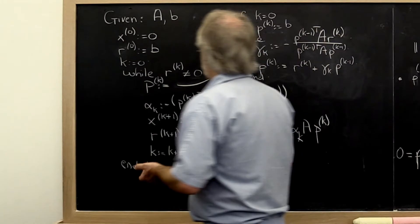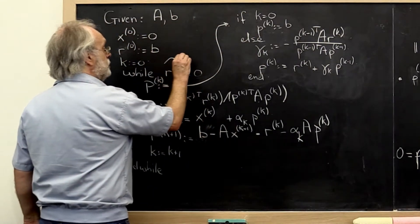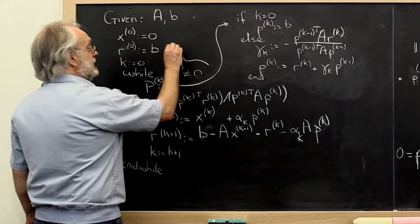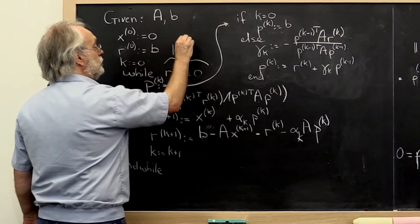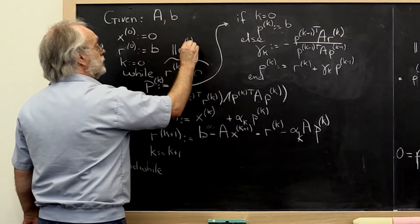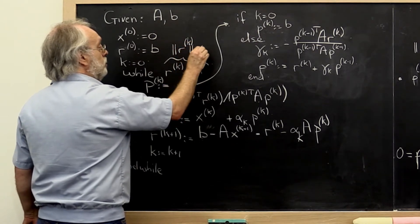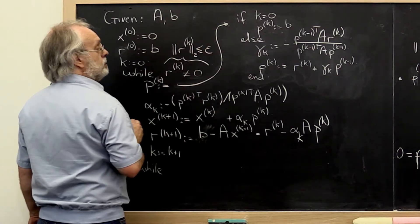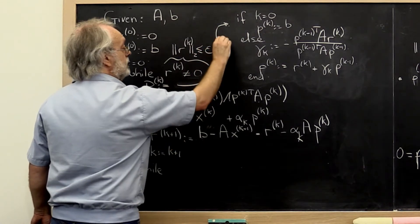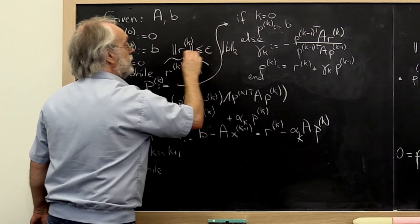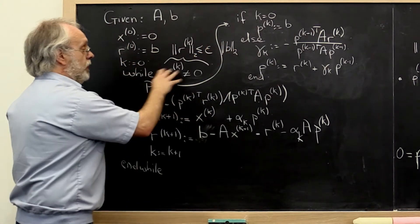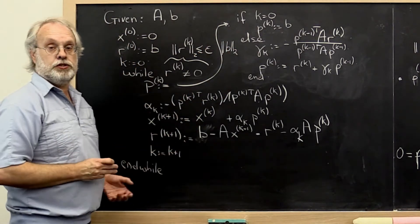So the stopping criteria that people tend to use is to say let's instead look at the 2-norm of the current residual and compare that to some epsilon times the original right-hand side. And if that becomes small enough, then you say the method has converged.